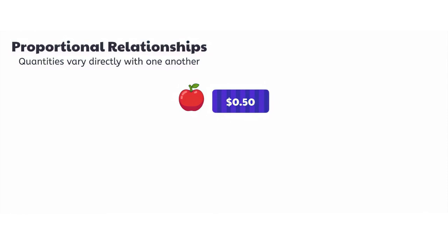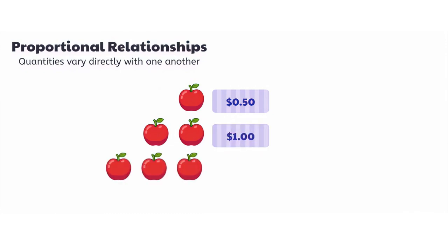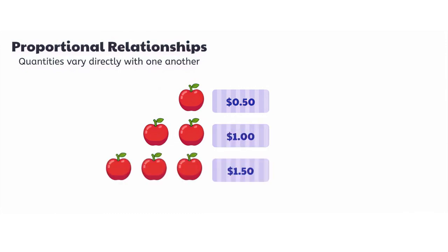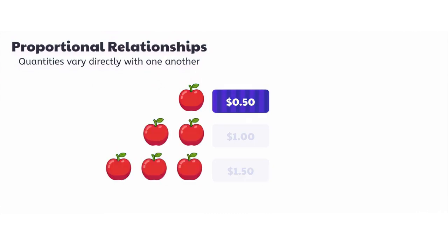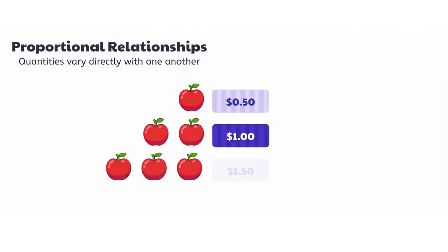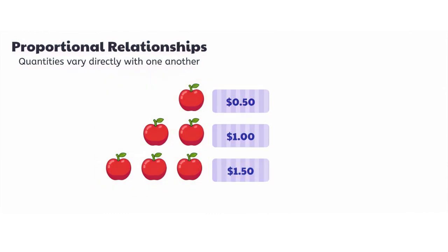If you buy one apple, it costs 50 cents. If you buy two apples, it costs one dollar. If you buy three apples, it costs one dollar and fifty cents, and so on. For each additional apple you buy, the total cost goes up by 50 cents. This is a proportional relationship.